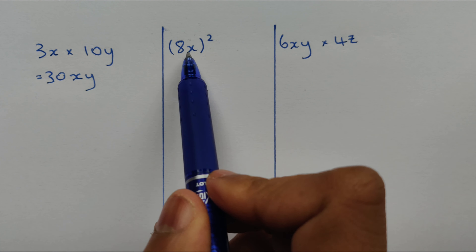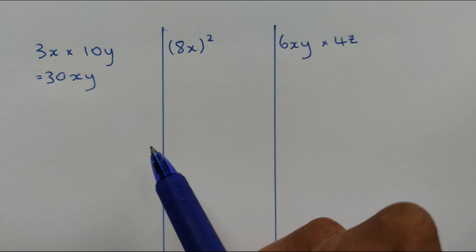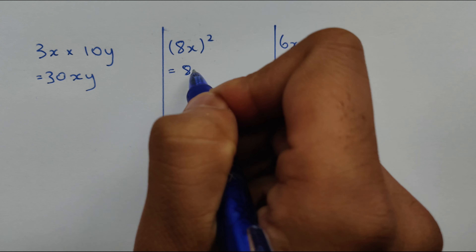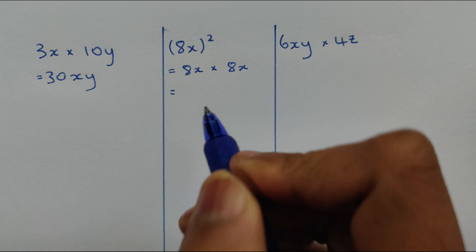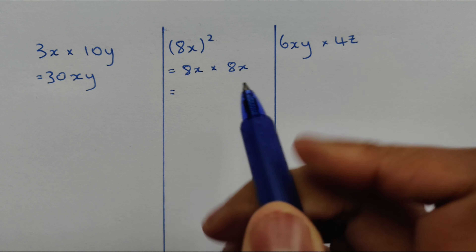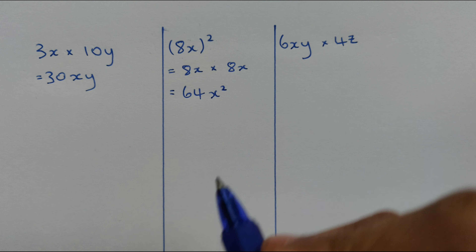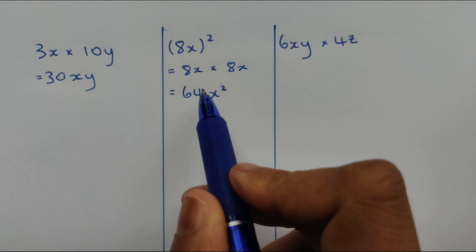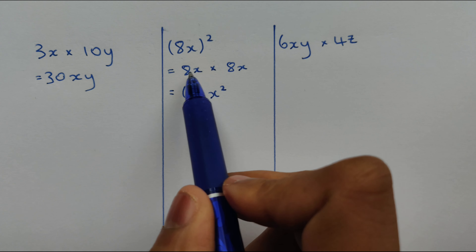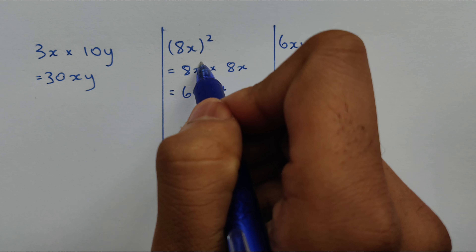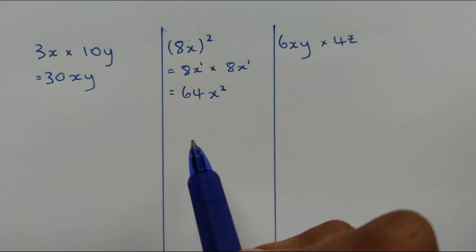Next example: 8x all in brackets squared. When something is squared we're multiplying it by itself, so we get 8x times 8x. Coefficients first: 8 times 8 is 64, and then x times x is x squared. When we're multiplying the same variable together we add the powers. Remember 8x is the same as 8x to the power of 1, so we have 1 plus 1 which is 2 — that's where the squared comes from.